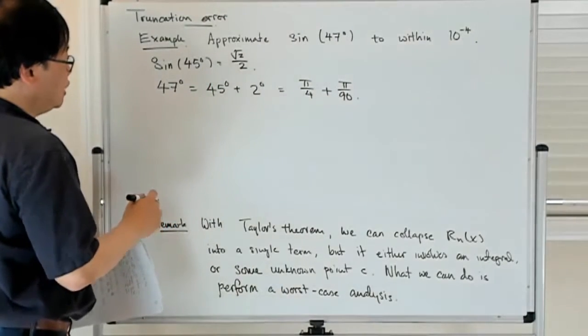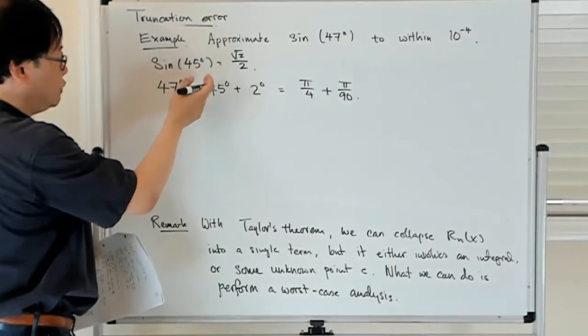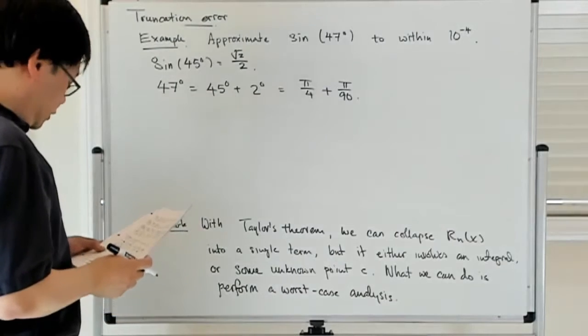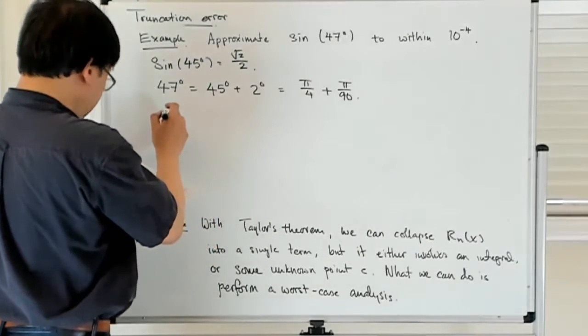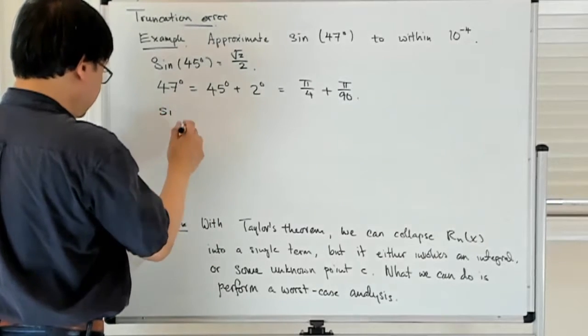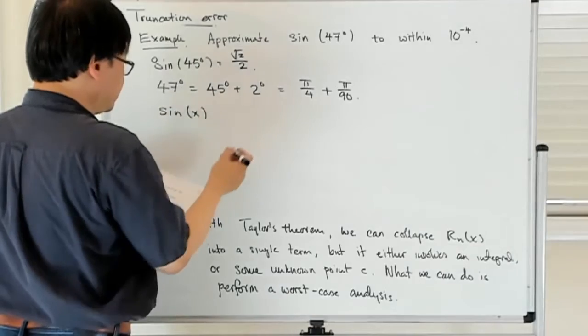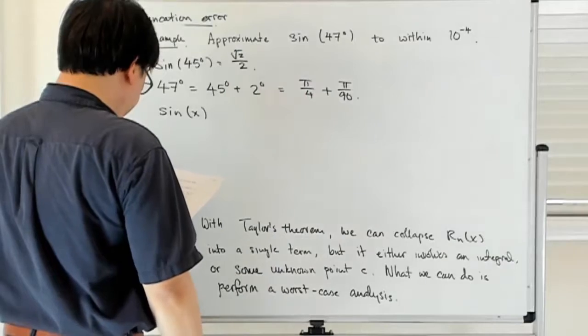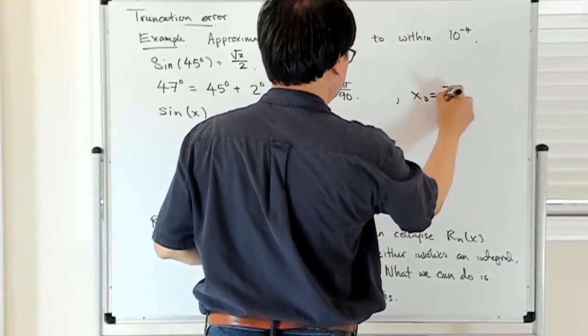So what's going to happen then is that I know the value of sine at 45 degrees or at π over 4. I also know its derivatives there, so what I want to do is write sine of x in terms of a series which is centered around x0, which is π over 4. So I'm going to have x0 as π over 4.